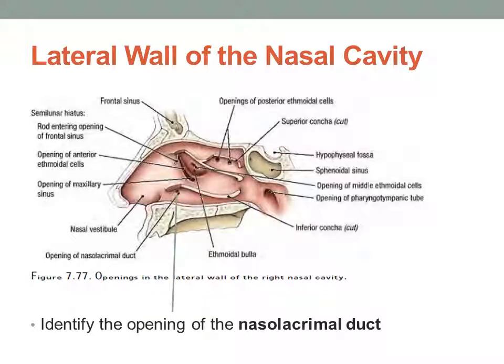If you've ever wondered where your tears drain after they drain from the medial aspect of your eyes through the nasolacrimal duct — well, they actually end up in your nose. Here's the opening of your nasolacrimal duct in the inferior nasal meatus.